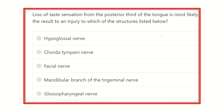Hey everyone, today we are going to discuss another question for the MRCS exam. Here is the question: loss of taste sensation from the posterior third of the tongue is most likely the result of an injury to which of the structures below?